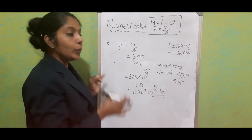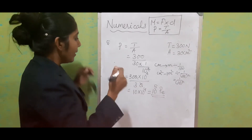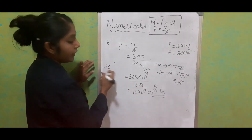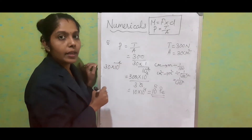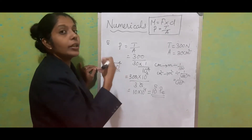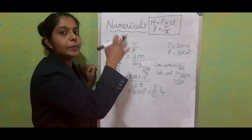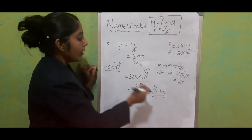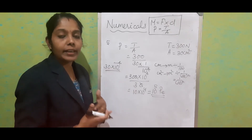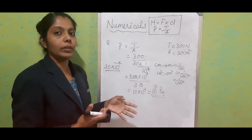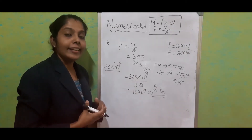Wherever you get centimeter, convert it into meter by dividing. For 30 centimeter square, write it as 30 into 10 to the power minus 4 meter square. Substitute the values and find out the answer in proper unit. If the area is not given in SI unit, you can directly work in CGS unit as well.